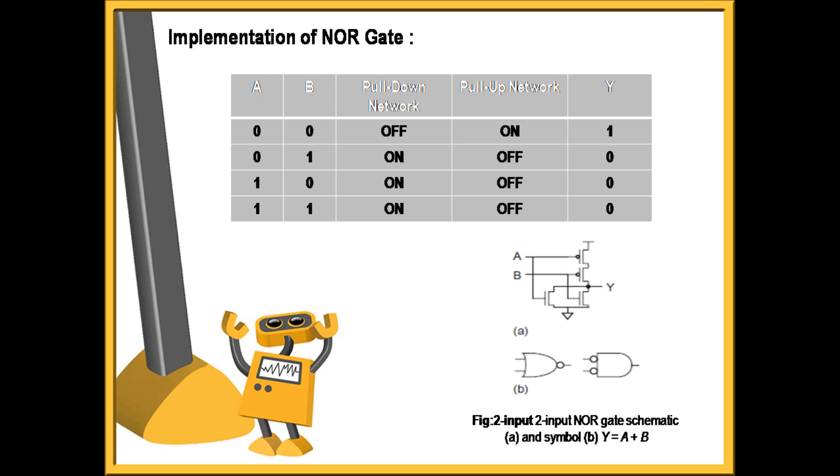For inputs A and B equal to 0, the pull-up network gets on and the pull-down network gets off. Hence, the output Y equals 1 is fetched because of the pull-up network getting on. For the next input A equals 0, B equals 1, or vice versa, A equals 1 and B equals 0, the pull-down network will be on and the pull-up network gets off. That is why the output Y equals 0.